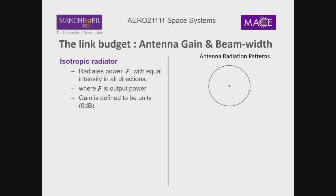If we want to characterise the performance of an antenna, the antenna provides gain — meaning an increase in signal strength. If we have an isotropic radiator, it radiates power from the transmitter equally in all directions. Power P comes out in a sphere propagating through space. So our output power in relation to the transmitted power is equal to one.